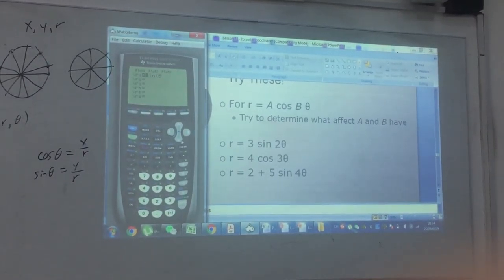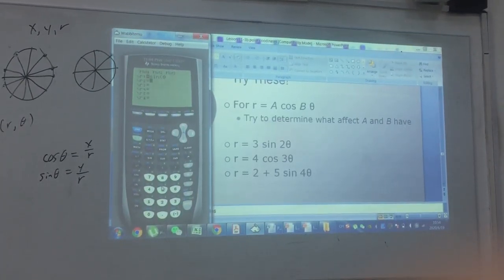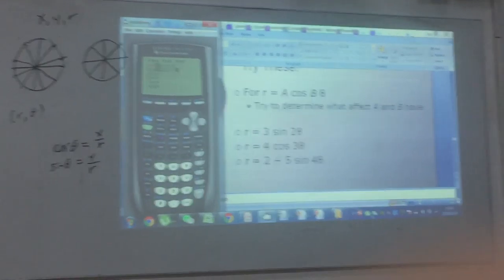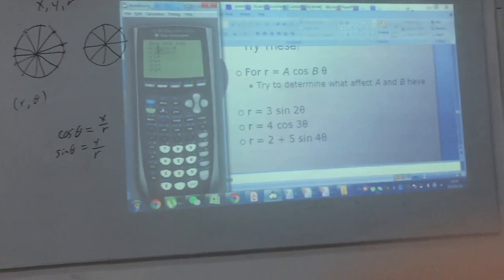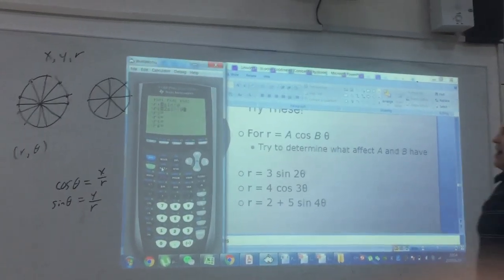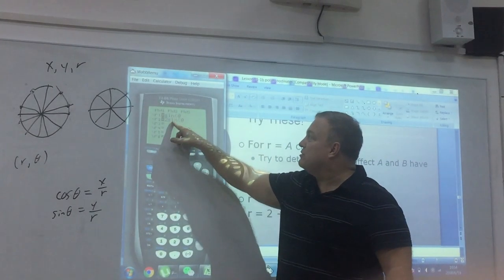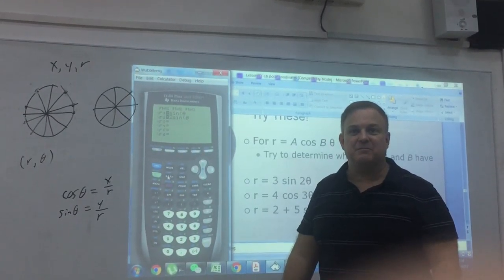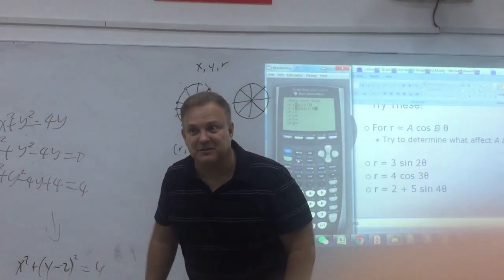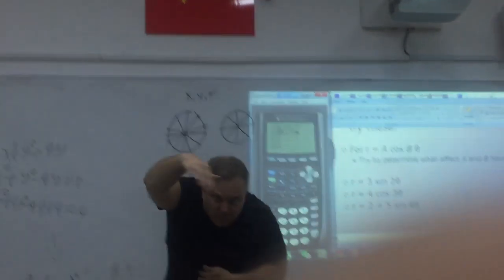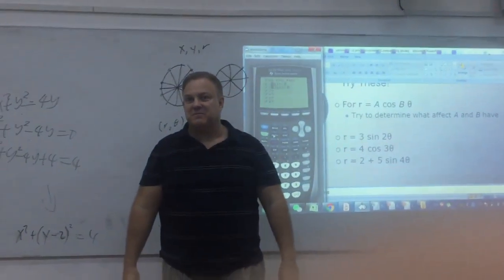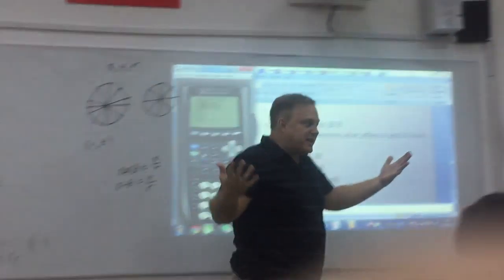What do you think is going to happen if instead of sine theta, I have 2 sine theta? What do you think? So, again, before I hit this graph button, if I have 2 sine theta instead of sine theta, what's that going to do? It's going to make my amplitude bigger, right? Which means I'm going to go further away from the center. So what's that going to do to the circle? It's going to make it bigger. Does that make sense?